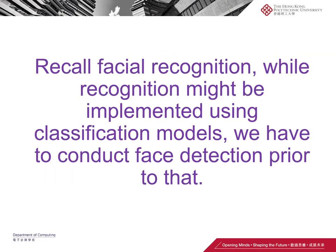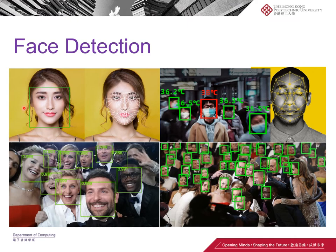Let's recall an example everyone is familiar with: facial recognition. Facial recognition is to recognize the identity of someone. However, before facial recognition, another process has to be done — face detection. That means we have to locate where the faces are before we can recognize who they are. There are usually many faces in an image, and we need to know their specific locations and count.